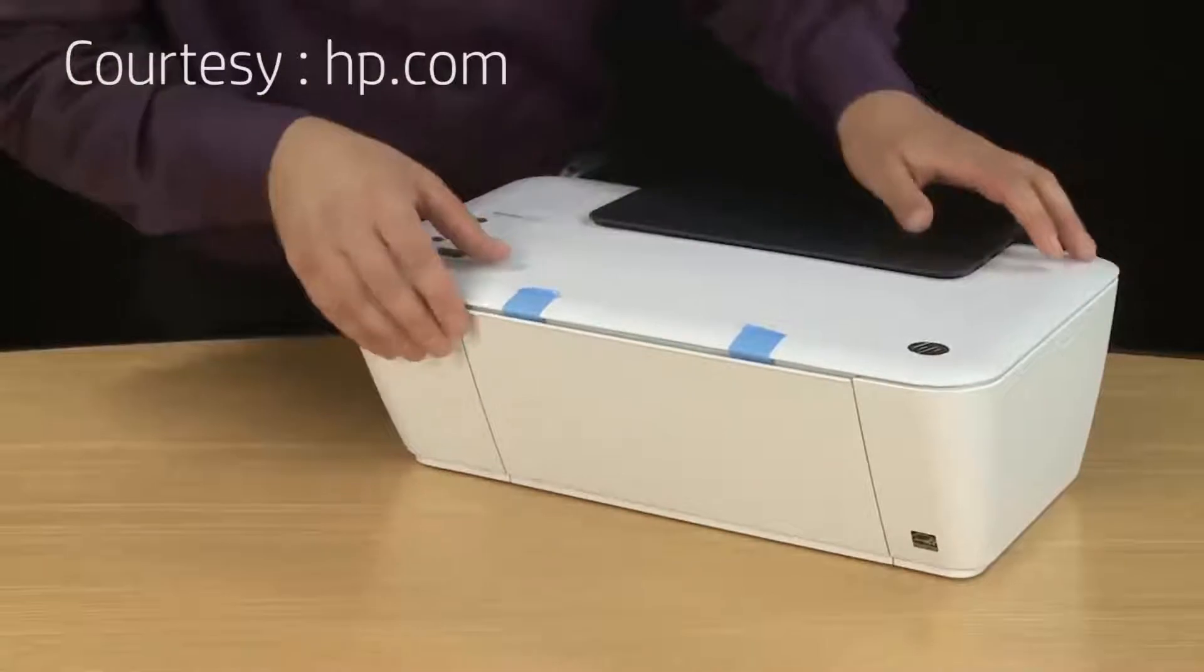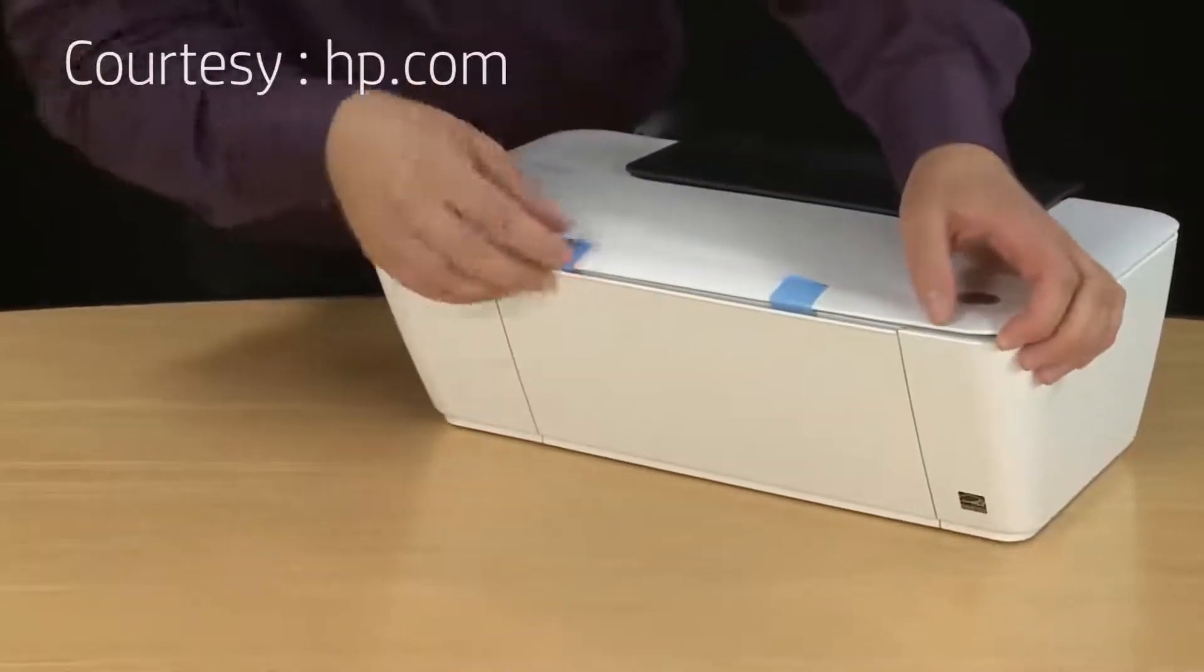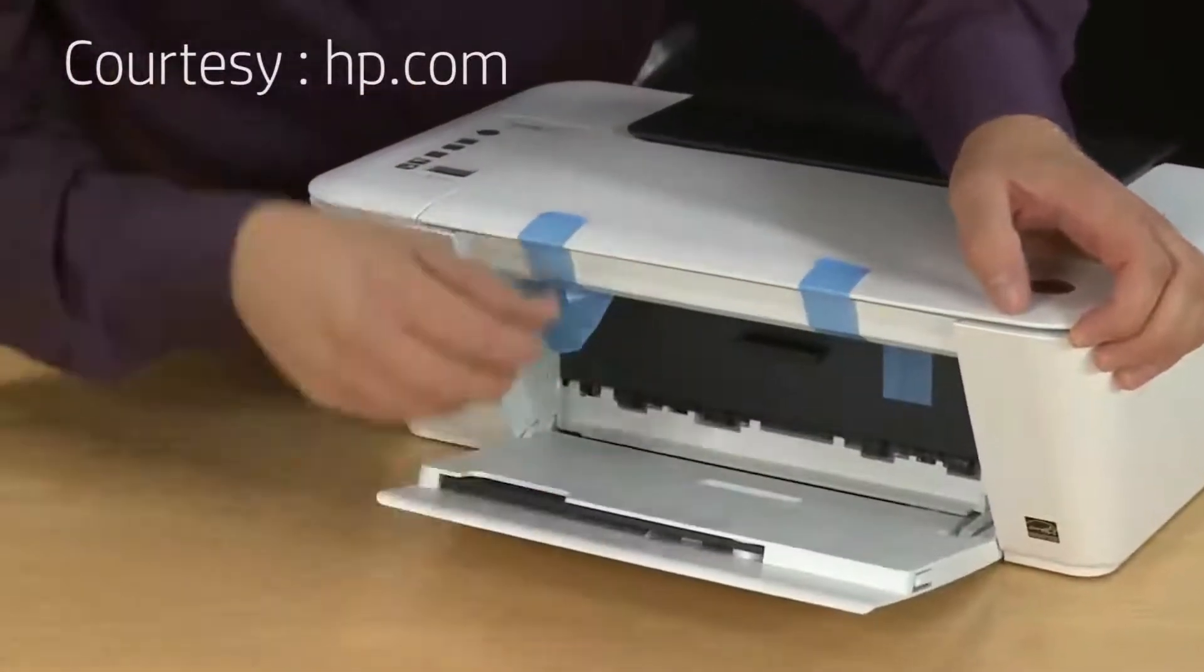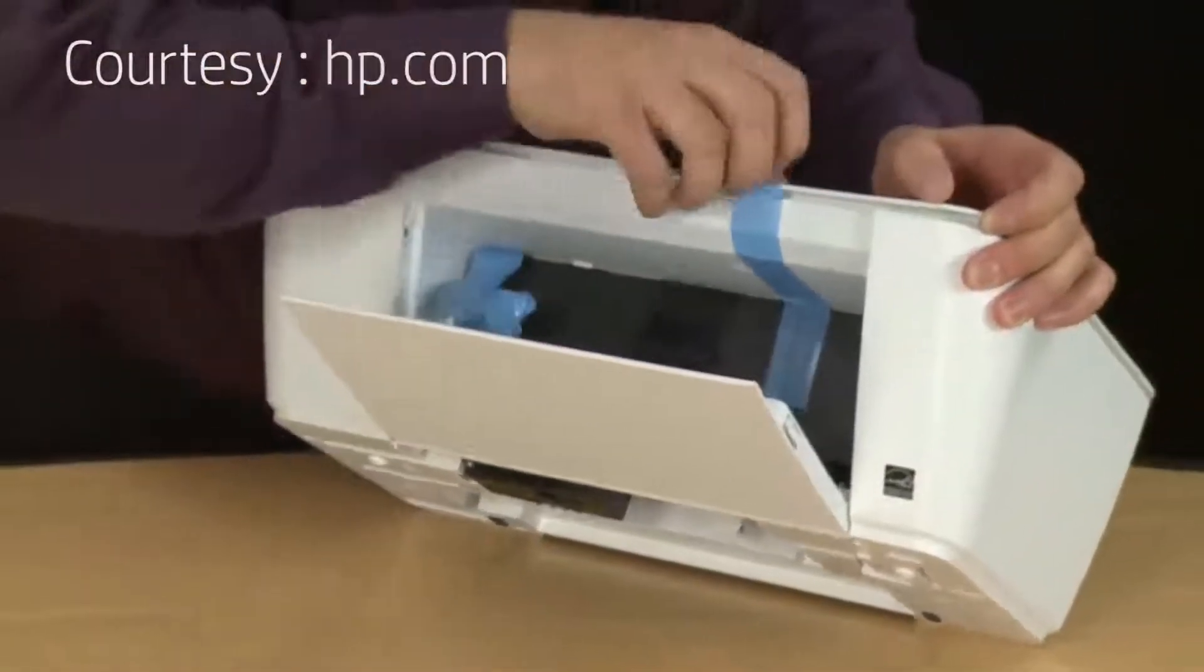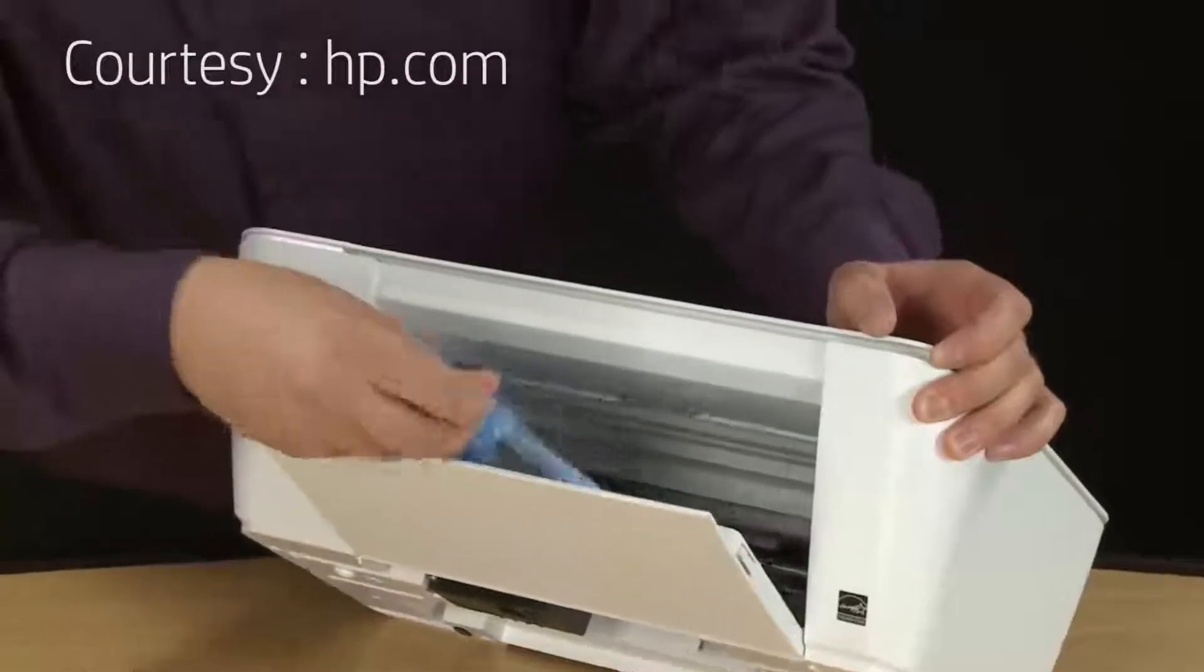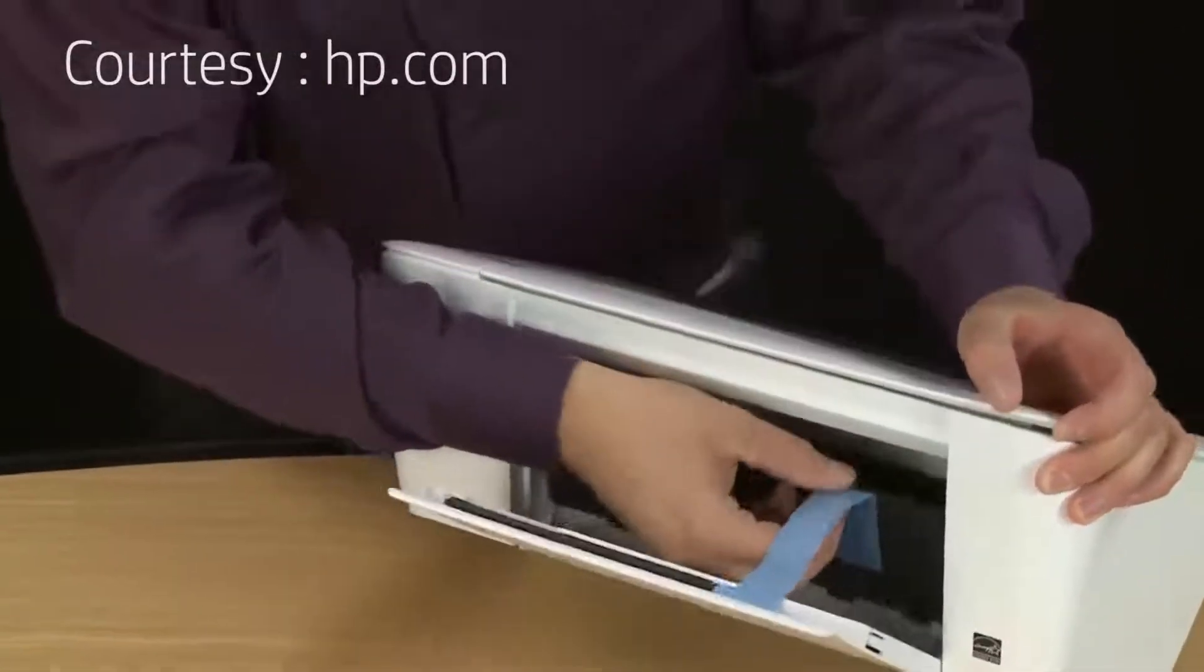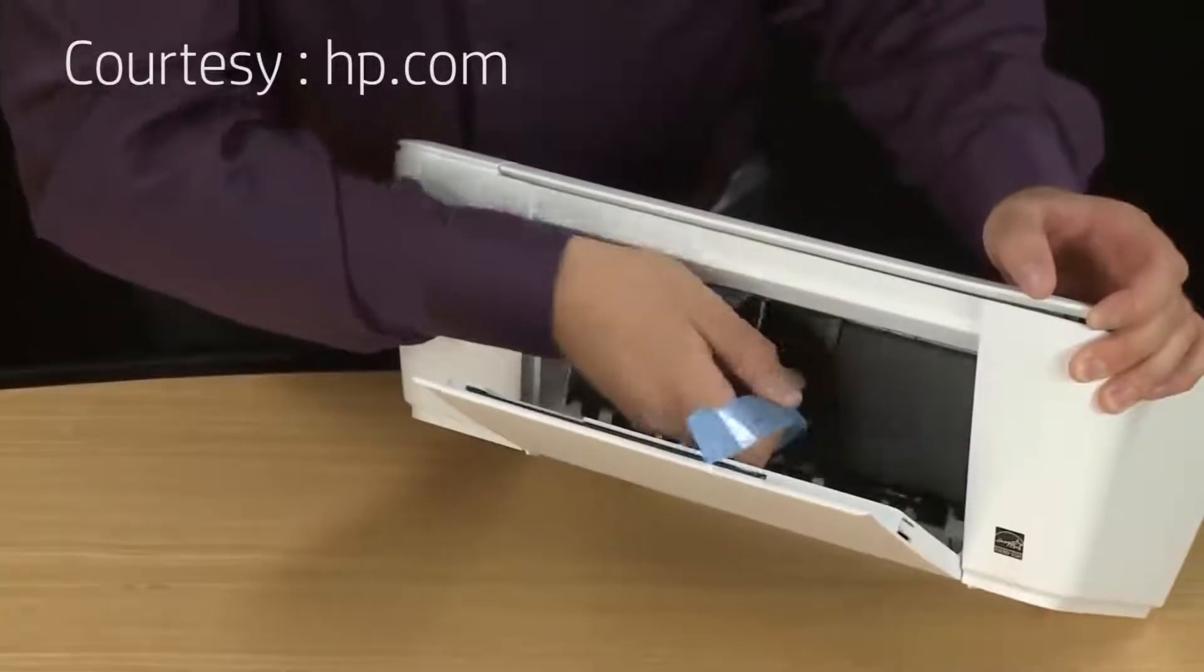Once these are removed, open the output tray. Starting at the top of the printer, remove the piece of tape on the left hand side of the ink access door. Do not completely remove this piece of tape at this time—we'll come back to it. Then remove the tape on the right hand side starting at the top of the printer. You'll completely remove this piece of tape.